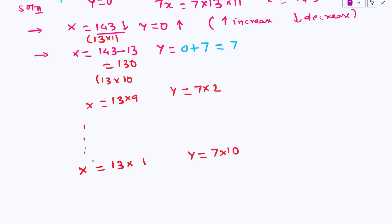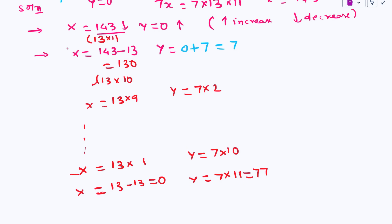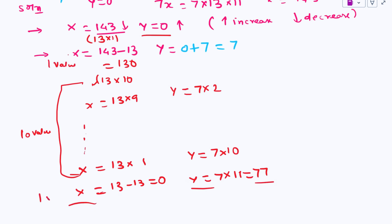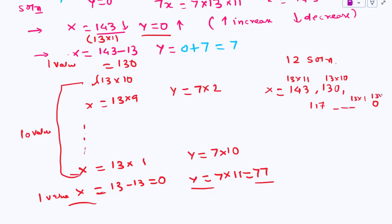We will also have one value where x becomes 0 and y has some value. When we subtract 13 from the last x value, 13 minus 13 becomes 0 and y will be 7 into 11, which is 77. So the first value is x equal to 143 and y equal to 0, then 10 values from 13 into 10 down to 13 into 1, and finally x equal to 0 and y equal to 77 — giving a total of 12 non-negative integral solutions.